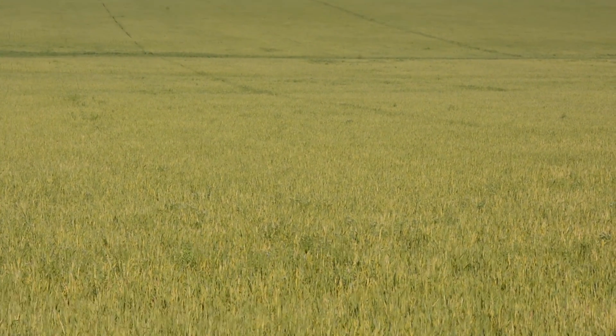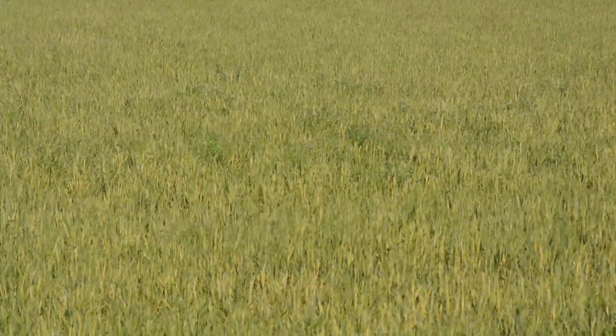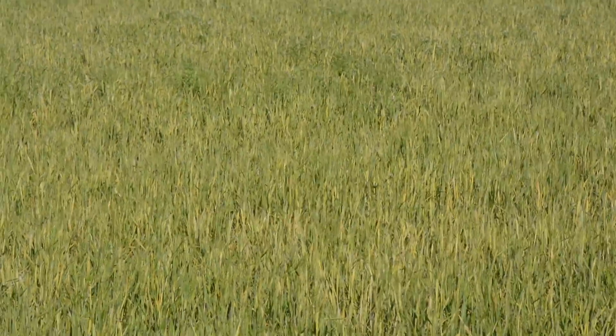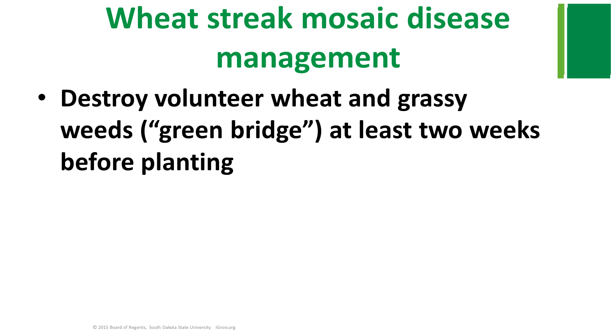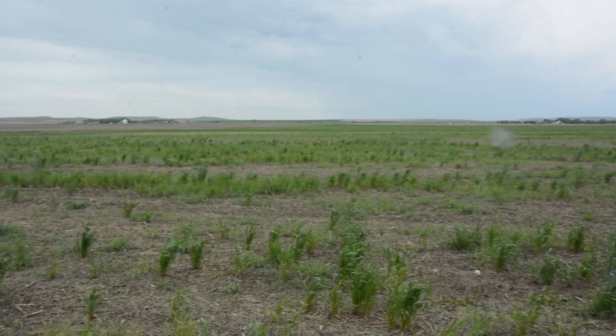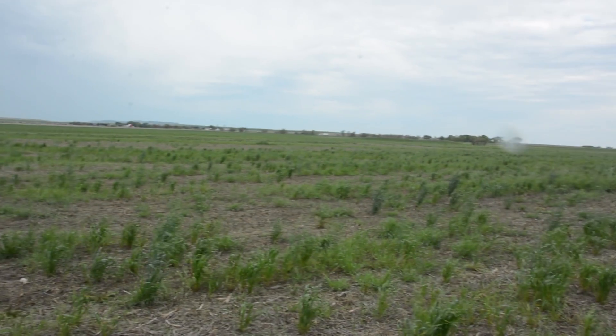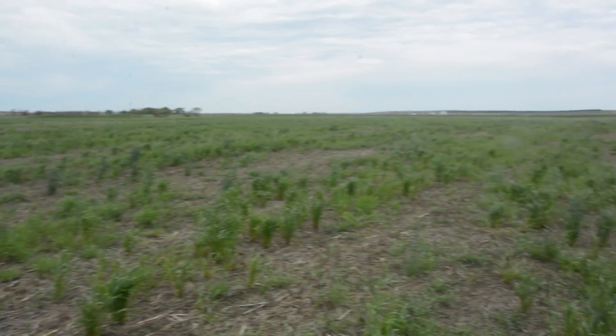Wheat streak mosaic virus disease can be best managed through cultural practices. Unlike fungal diseases, nothing can be spread on virus-infected plants to prevent or cure virus infection. However, several practices can be used to prevent or lessen chances of wheat getting infected by this virus. First, we want to destroy volunteer wheat and grassy weeds at least two weeks before planting to reduce chances of infection. Volunteer wheat and grassy weeds are the most important risk factor for wheat streak mosaic disease.